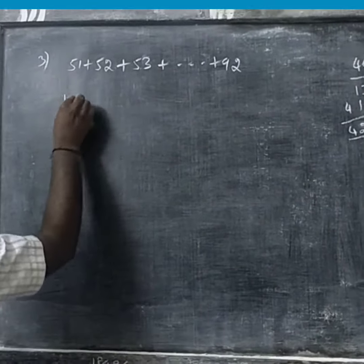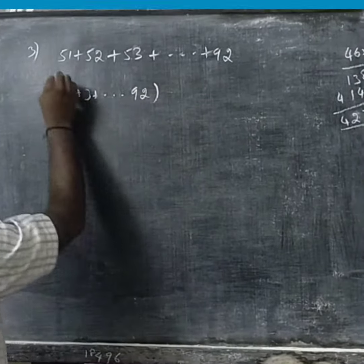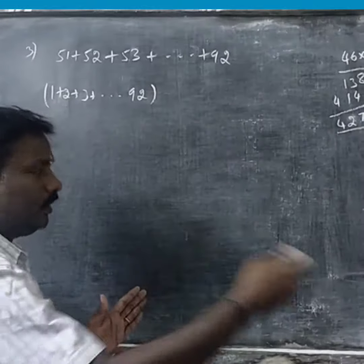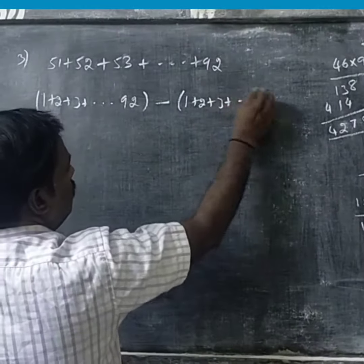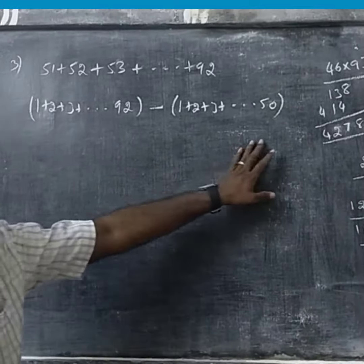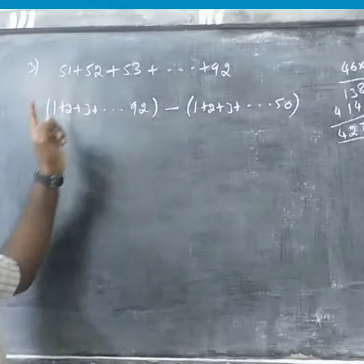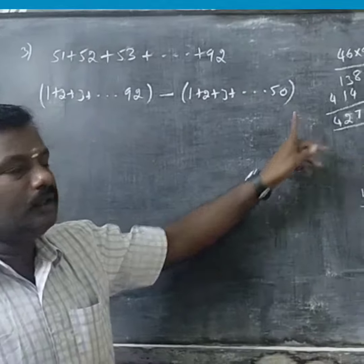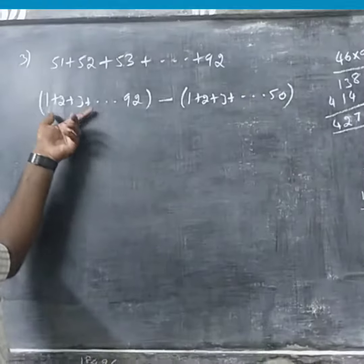We will tell you about 1 plus 2 plus 3. 1 plus 2 plus 3 will be up to 92. So 51 to 92 goes full — you have to add 1 to 92 and subtract 1 to 50. So the concept is: if you use 51 to 92, then you can use 1 to 92 minus 1 to 50.